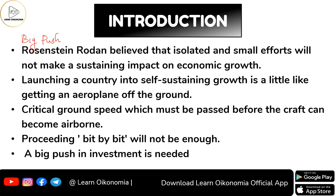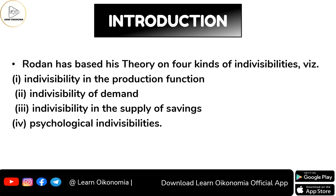He considered the critical ground speed which must be passed before the craft can become airborne. Rather than going for a bit-by-bit approach, it is very much needed to go for a big push — meaning a high critical amount of investment. He has based his theory on four different kinds of indivisibilities: indivisibility with respect to the production function, indivisibility with respect to demand, indivisibility with respect to supply of savings, and psychological indivisibilities.